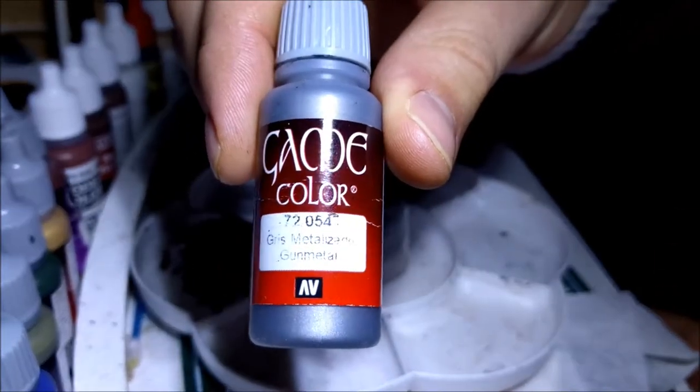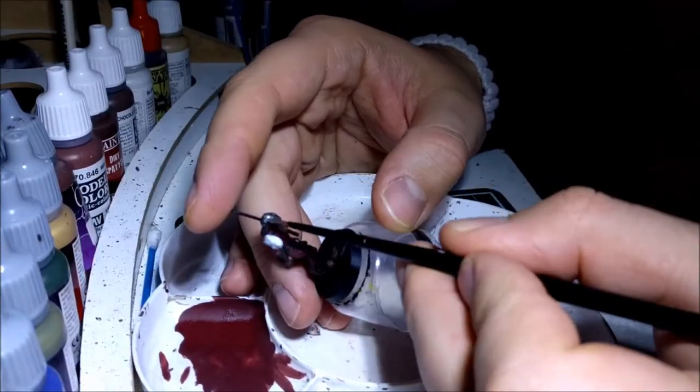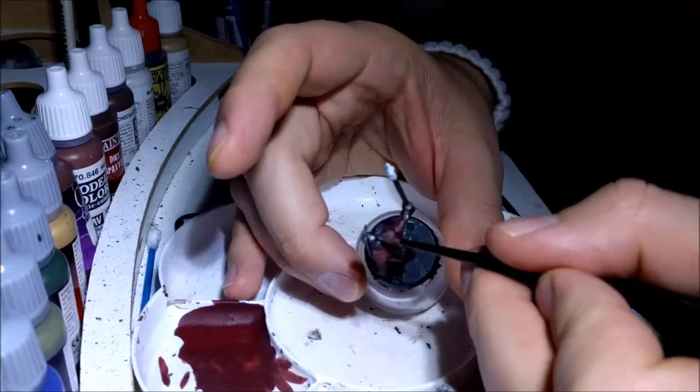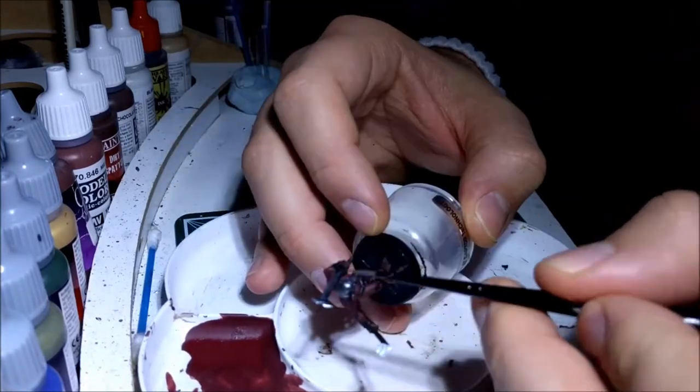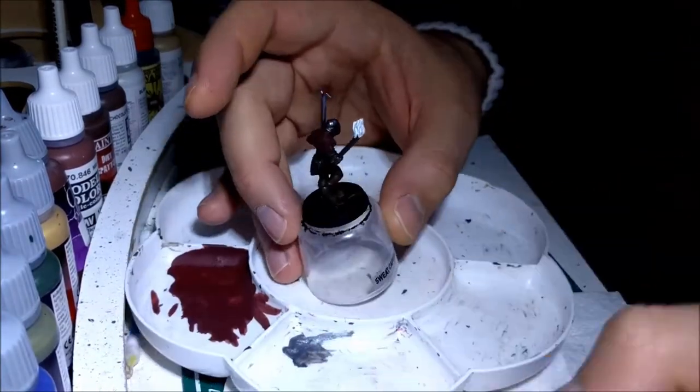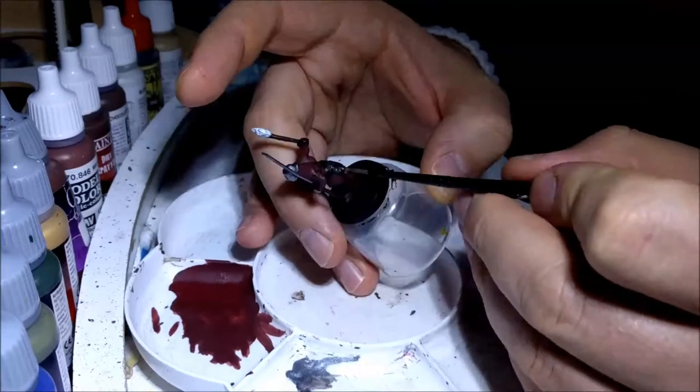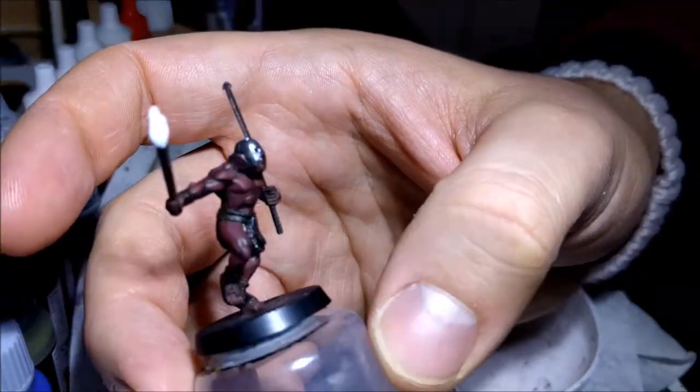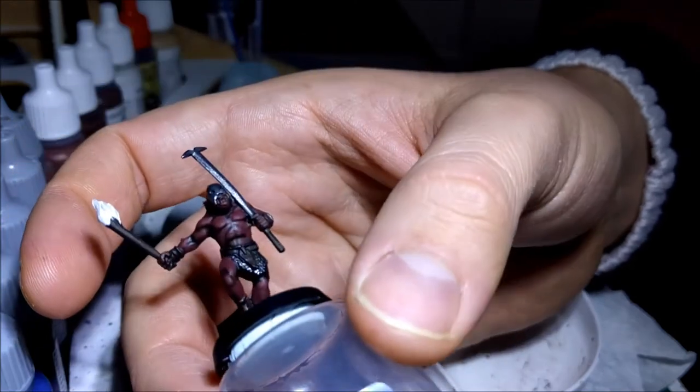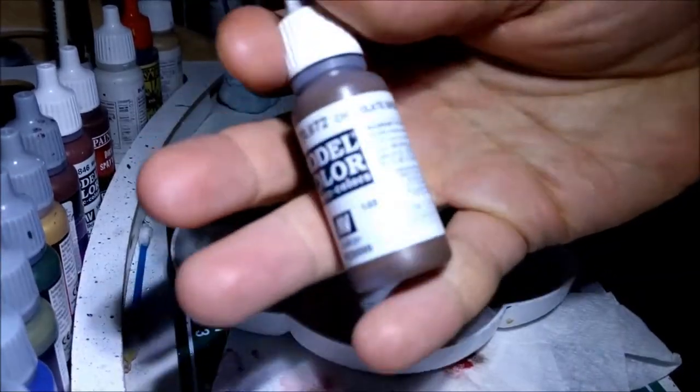So I went back with the chainmail again. Then I just gave the metal bits a bit more of a highlight. Just again with, it's gunmetal not chainmail sorry, just the edges and only with that, not with a higher silver. Simply because I don't want too much silver on these ones because they're quite gruesome and dark anyway.